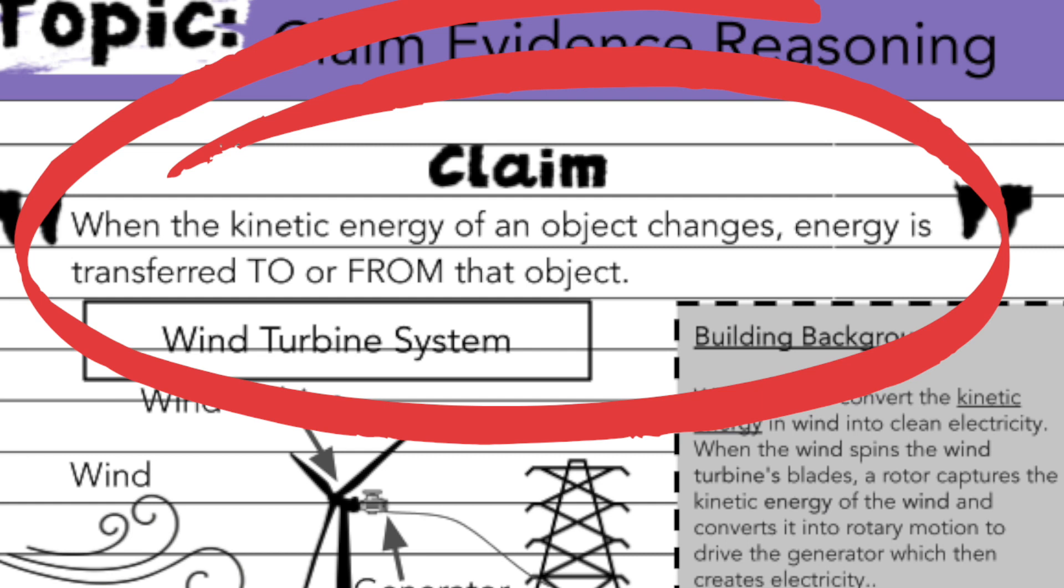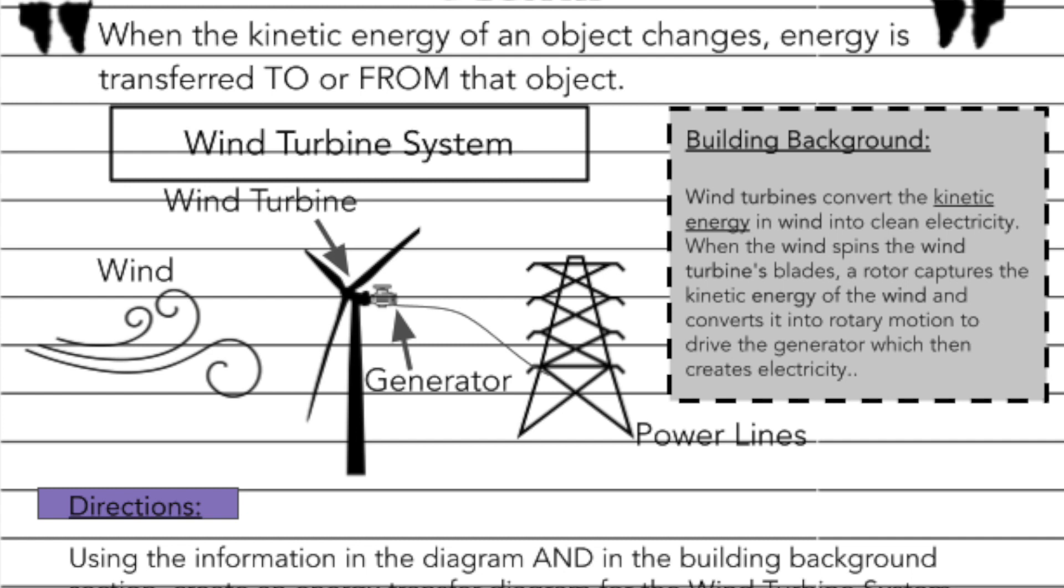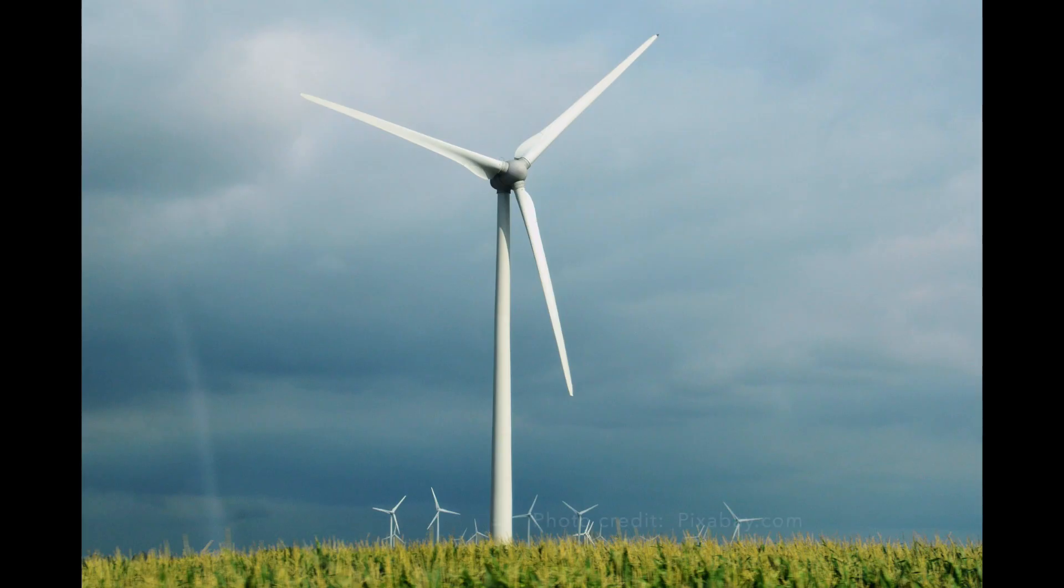In order to prove that, we need evidence. To collect our evidence, we're going to focus on a wind turbine system. You may have seen one of these before; people often refer to them as windmills, but they're actually wind turbines, and what they do is convert the wind energy into clean electricity.